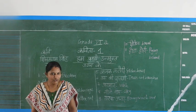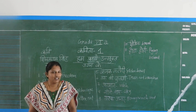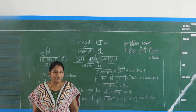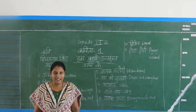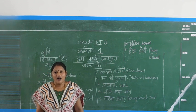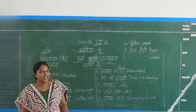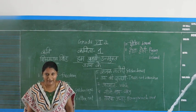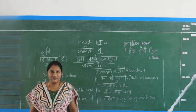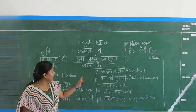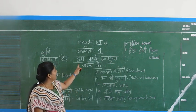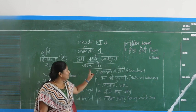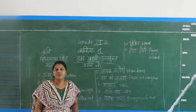Namaste Batcho. Welcome to Grade 7 Hindi class. Today we are going to read the first poem in your book — 'Ham Pakshi Unmukth Gagan Ke.'